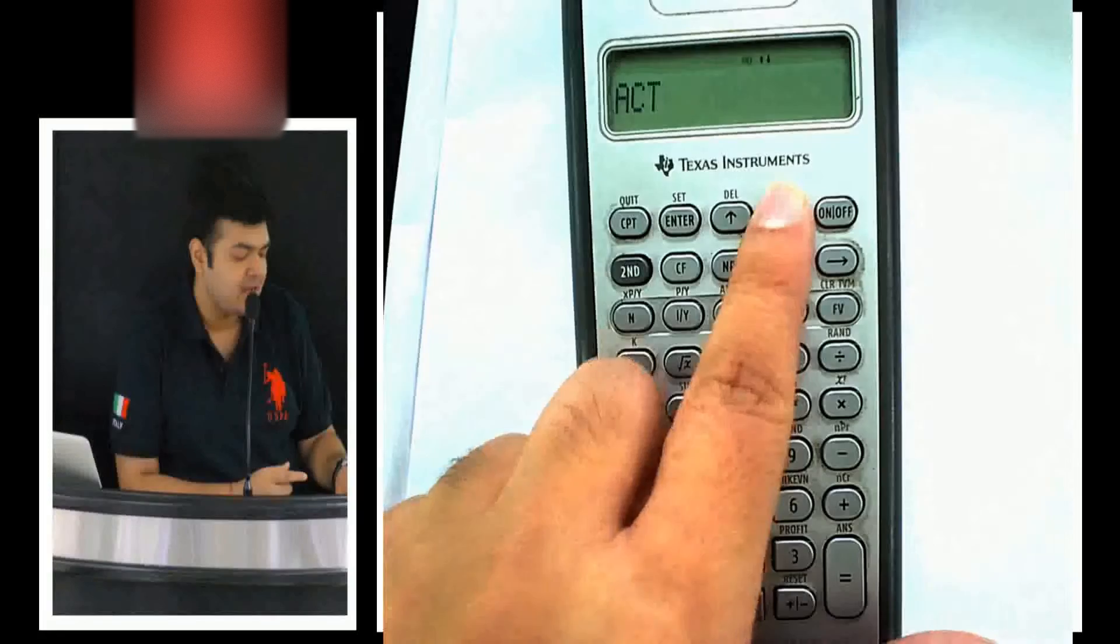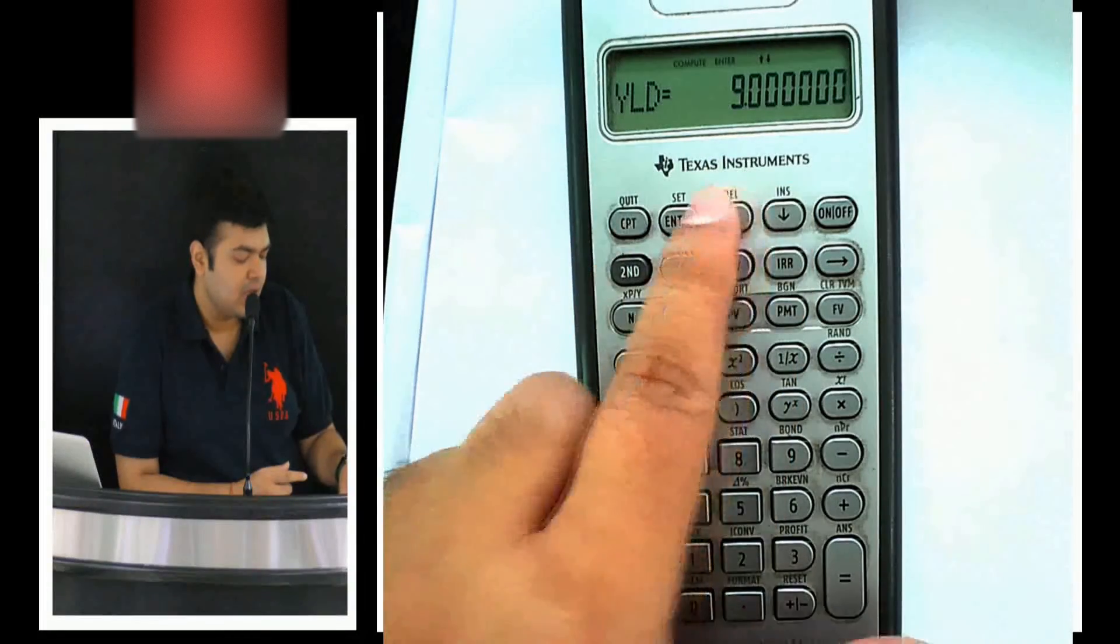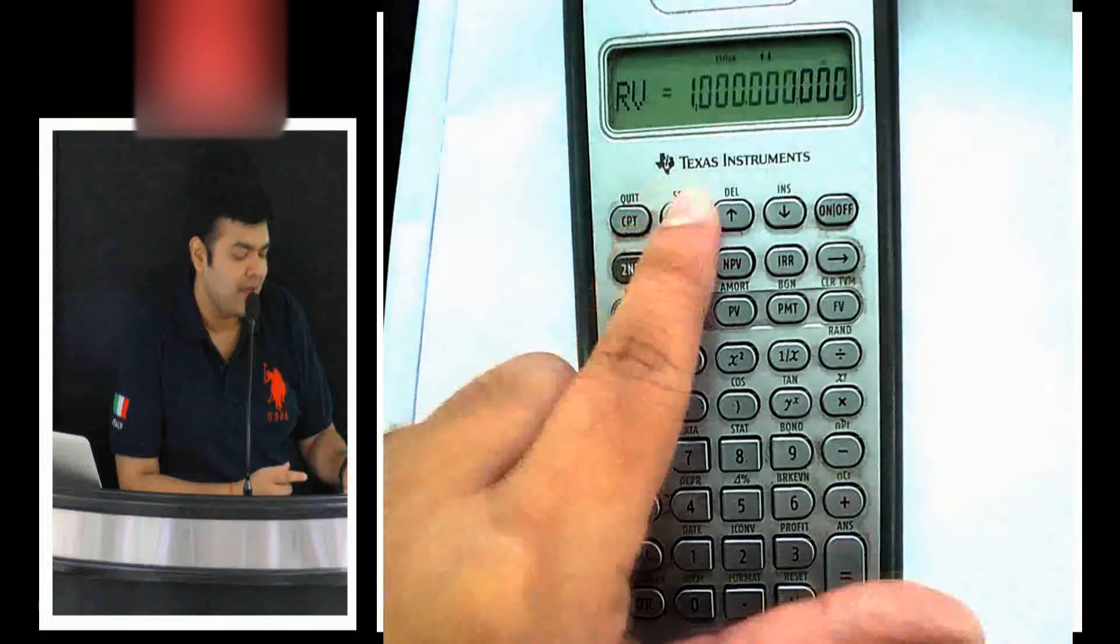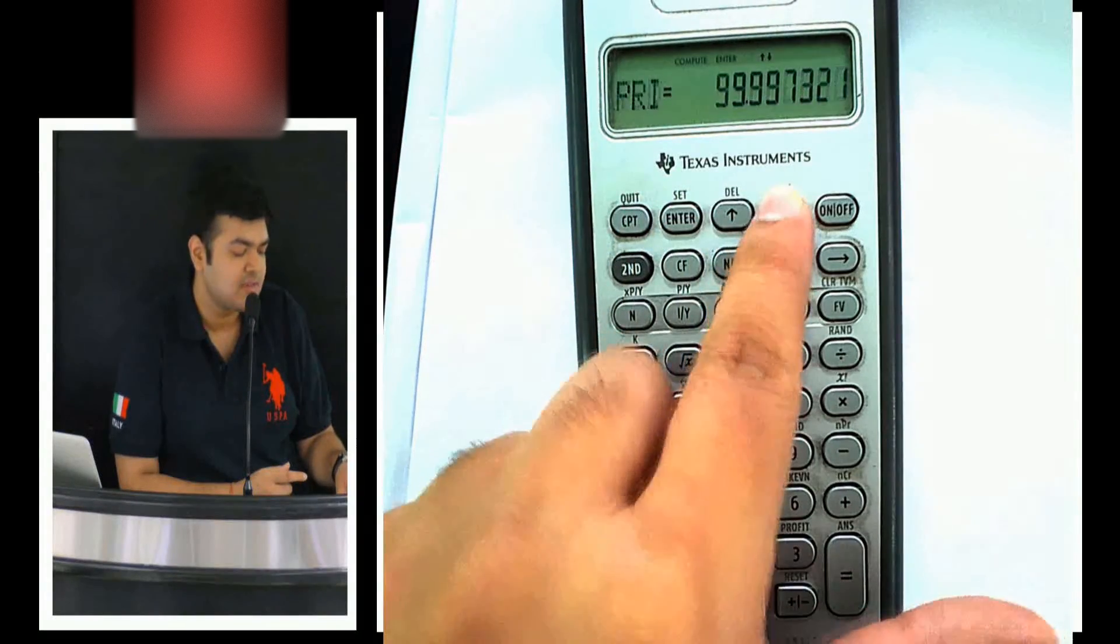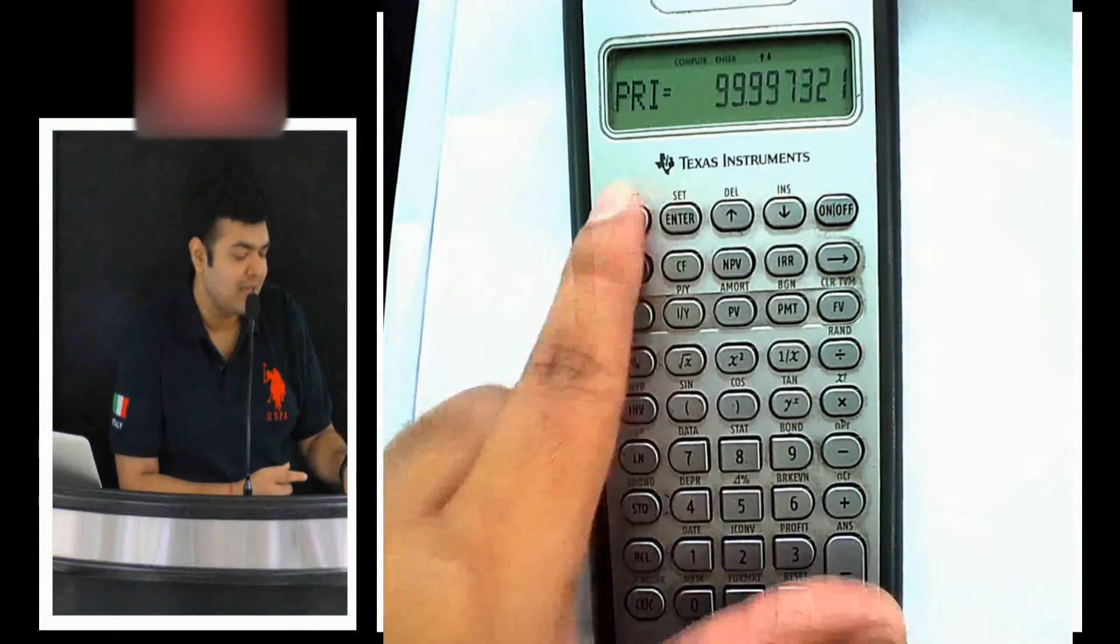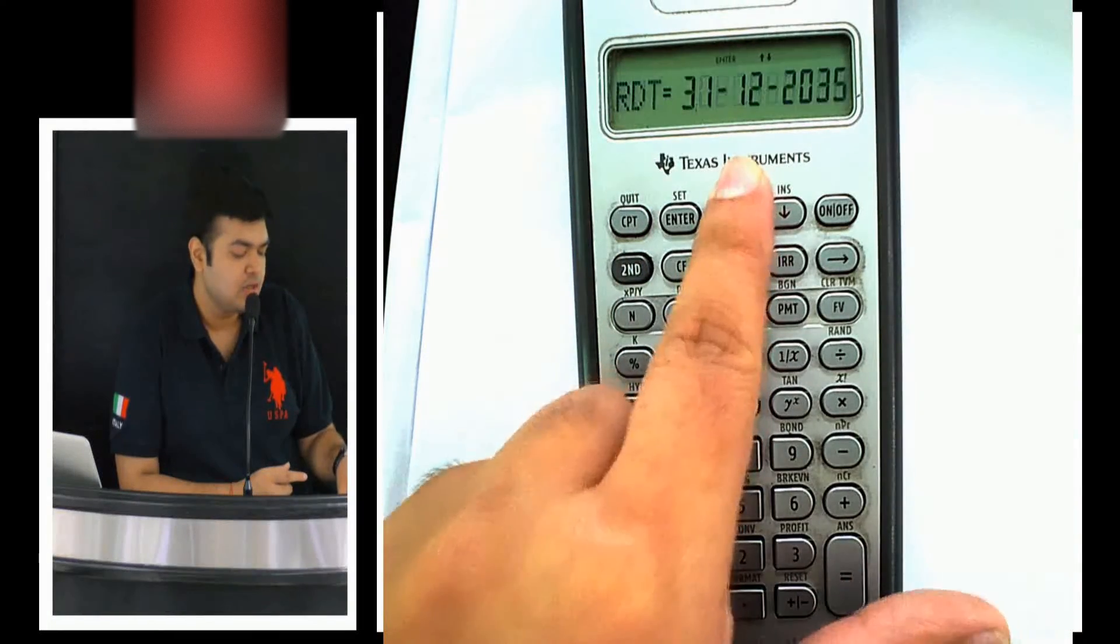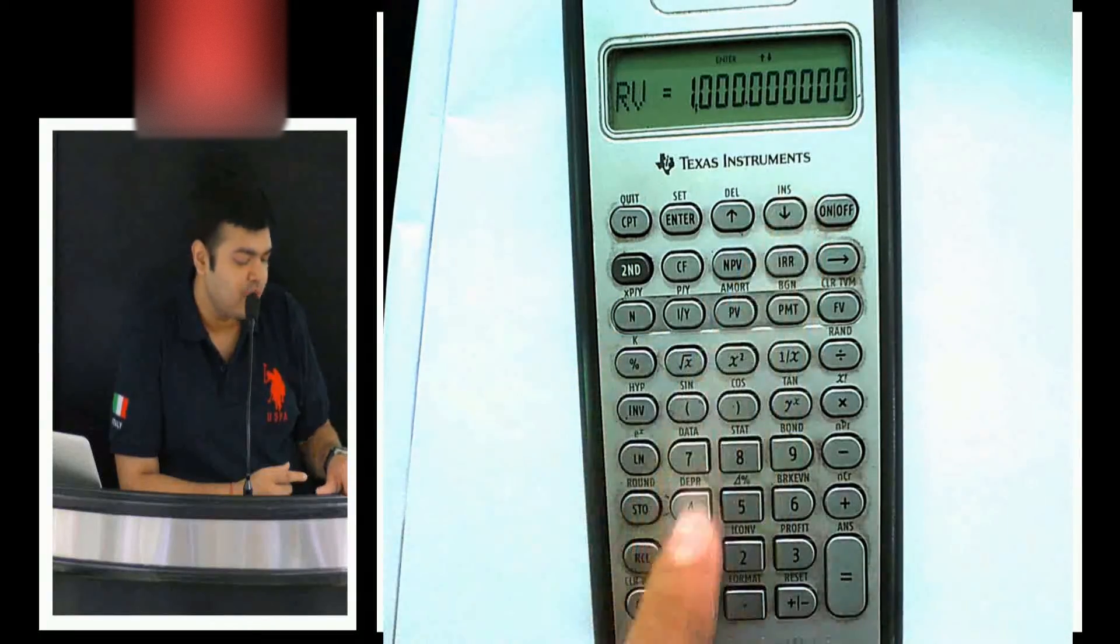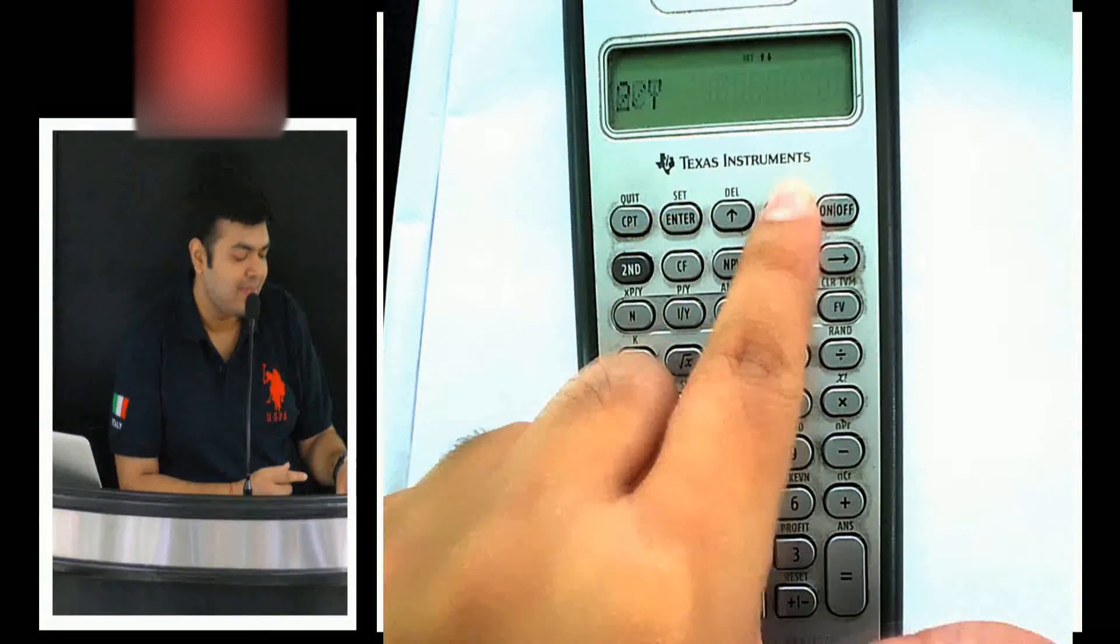If I enter the coupon as 90 and redemption value as 1000, and the yield is 9, the price is fine. But if I enter the coupon as 9, the redemption value has to be on a base of 100. With 8% yield, the price is 109.57.